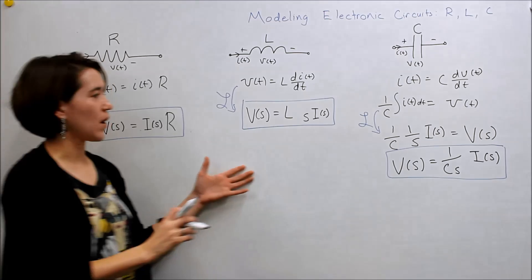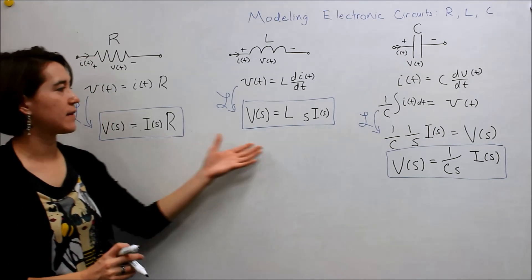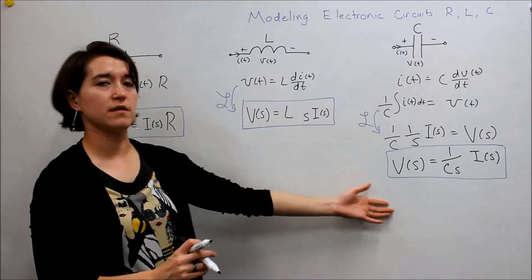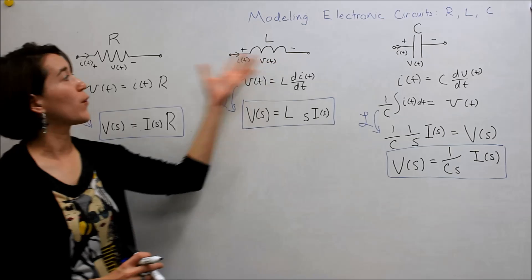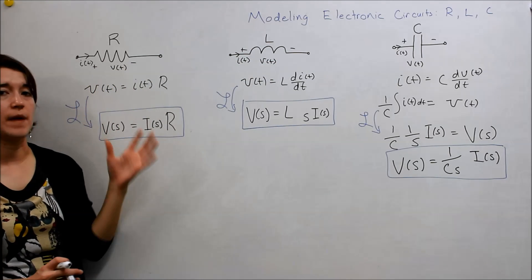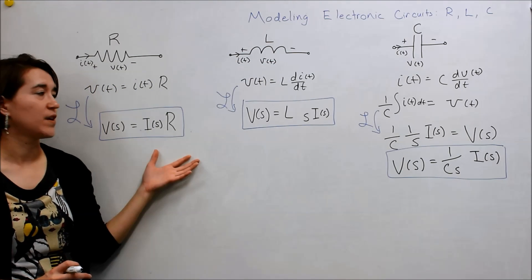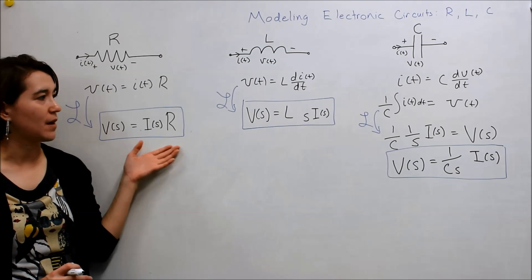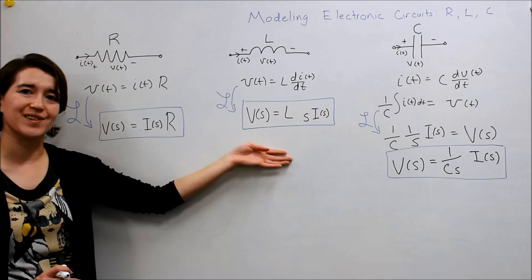So here are our three basic equations in the frequency domain for our components: V(S) = I(S)·R, V(S) = Ls·I(S), and V(S) = (1/Cs)·I(S). We're going to use these in future circuits, but I just wanted to show you how we derive these first.